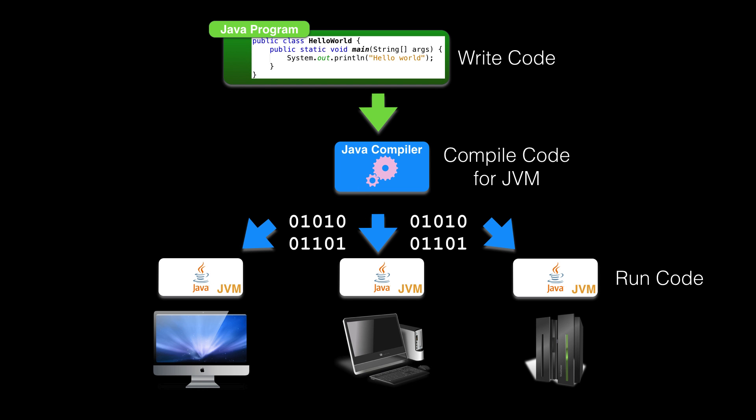Java uses something called a Java Virtual Machine, also called by its initials JVM. When you install Java on a computer, you install a JVM. Java applications you create are run on the JVM, and this is how Java achieves platform independence. The basic development flow for any Java program will be to write the Java code into a text file, compile the Java code into class files, which are then fed to a JVM. The JVM interprets the class file into code your machine can understand.